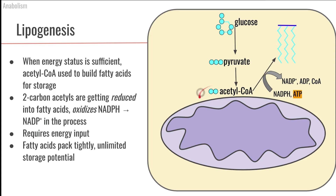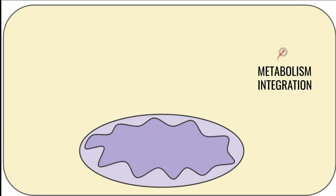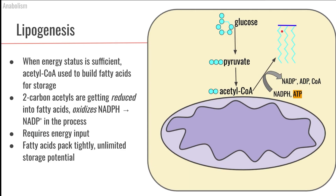Now as we are taking those acetyl CoAs and building two by two the fatty acid tails, we are going to have to oxidize some NADPH. This NADPH is donating electrons — giving away the hydrogens — in order to yield NADPH. Now you may say this is the first time I've heard of NADPH; I've always thought it was just NAD. For our purposes, it's not too important to understand the differences between those two compounds.